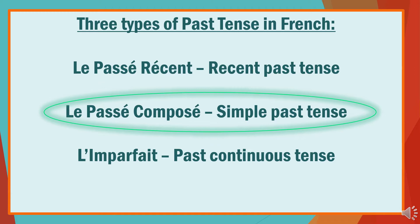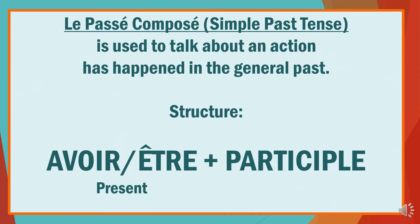The passé composé is used to talk about an action that happened in the general past. It is made up of two parts: the auxiliary verb — which can either be avoir or être in the present tense, which is why you need to know those two verbs thoroughly — and the second part is the past participle. Before we see how to judge whether to use avoir or être as the auxiliary, let's see how we form the participle of the verb in French.